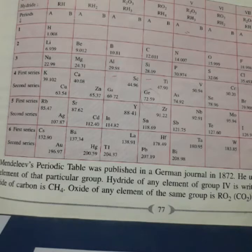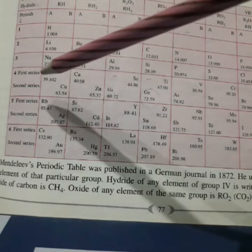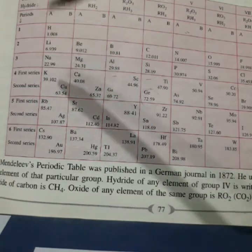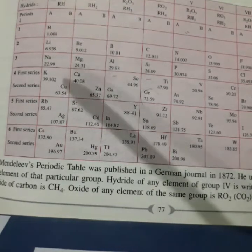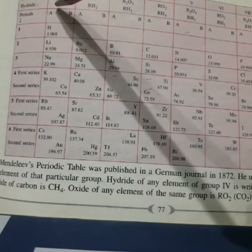Mendeleev used the formula of oxide and hydrides to group the elements together. For example, lithium, sodium and potassium. When they react with hydrogen, they will form respective hydride with the same formula, RH.